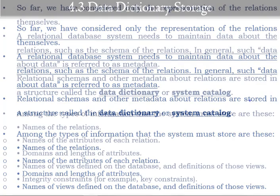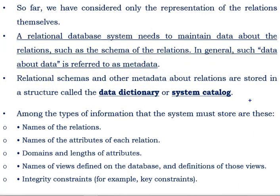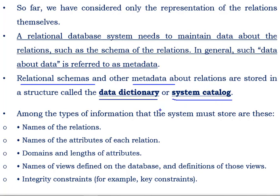Metadata is data about the data, data about the relation, and data about the database. So where exactly are relational schema and metadata stored? The place where we store our relational schema and metadata is referred to as the data dictionary and system catalog. So what is metadata and what are its contents?